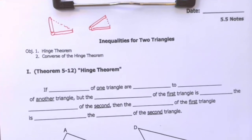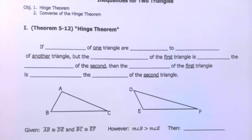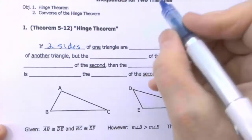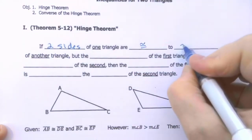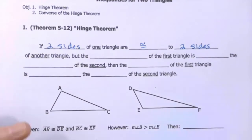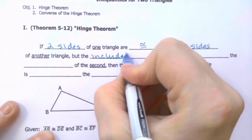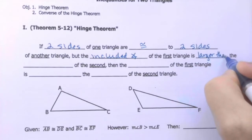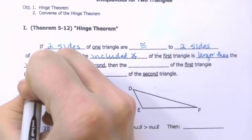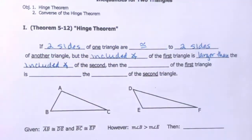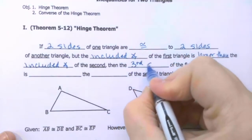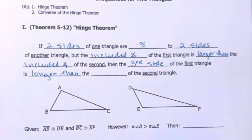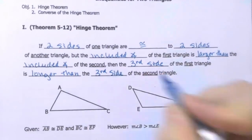Theorem 5.12 says: if two sides of one triangle are congruent to two sides of another triangle, but the included angle of the first triangle is larger than the included angle of the second, then the third side of the first triangle is longer than the third side of the second triangle.